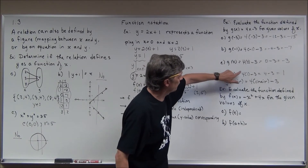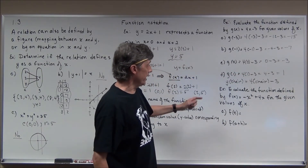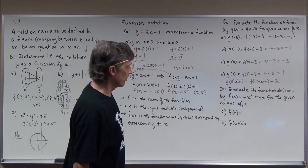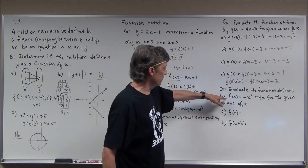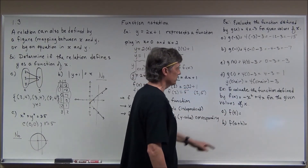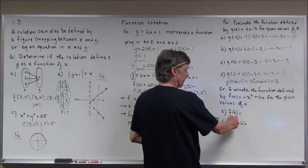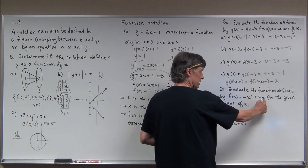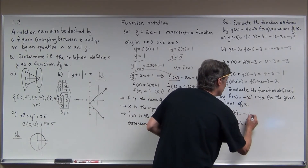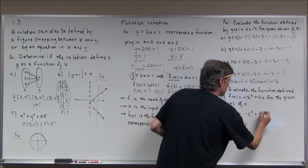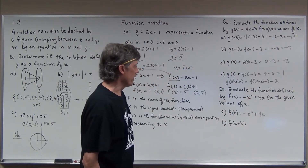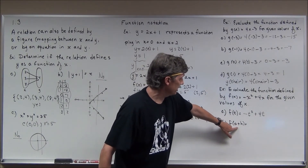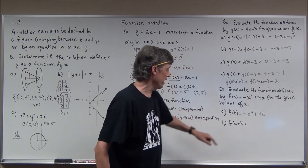That idea applies to the next example, where we plug in variable expressions rather than numbers. Evaluate f(x) = −x² + 4x for given values of x. For f(t): plug t in for x in both spots. We get the opposite of t² plus 4 times t. I don't know the exact value since t is unspecified, but that's what f(t) equals.